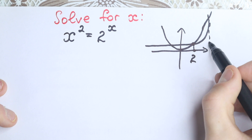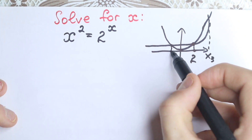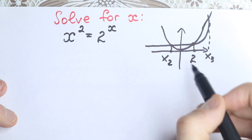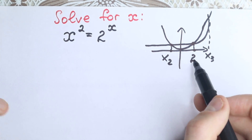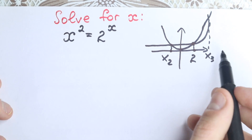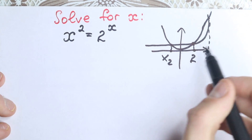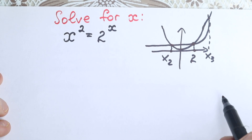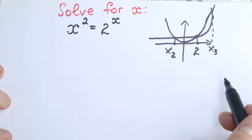But what about other solutions? Maybe right here we will have a point of intersection x₃, and maybe right here we will have a point of intersection x₂. So as you can see, maybe we'll have 1 root — 2 squared equals 2 squared, which is very obvious — but maybe we'll have more roots. So let's try to figure out about this question.